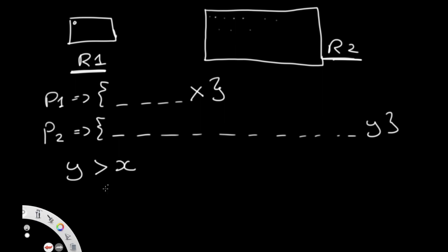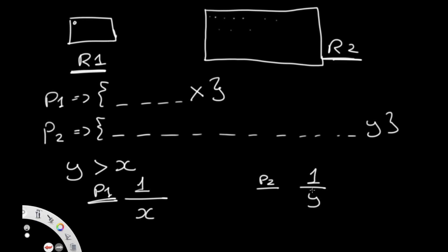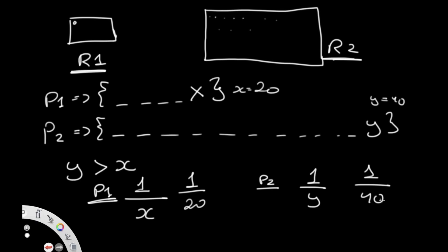What is the probability of getting a point from P1? P1 has x points, so getting one specific point is 1/x. Similarly, getting one point from P2 is 1/y. Since x and y are different, these are two completely different probabilities. With x=20 and y=40, the probability from x is 1/20 versus 1/40 from y — and 1/40 is less than 1/20. So the naive approach does not uniformly distribute all of our points.